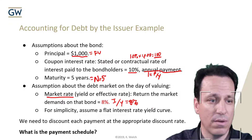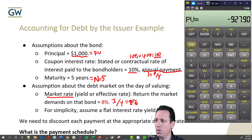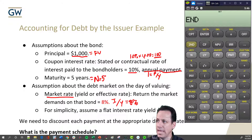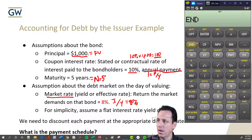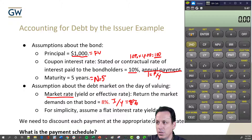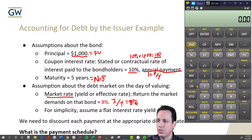We have everything we need. We pull up our calculator and do what we always do before we start a problem — we clear everything out. Clear time value of money, then second, clear work, and everything's cleared out. We also want to check to make sure our payments are at the end of the period. If you want to change those, go second, enter, and it'll change to beginning. We want to keep it at end, so you go second quit to get out. It doesn't explicitly say end of period, but you can assume end of period for the problems I do — if it doesn't say beginning, assume end.